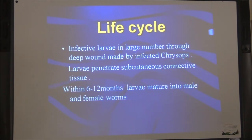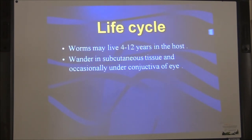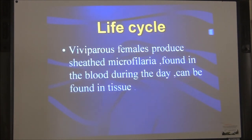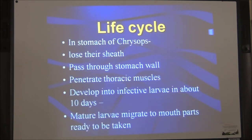The larvae are deposited on the skin and penetrate it. The adult worms live for up to 12 years in the host and wander in subcutaneous tissue and occasionally under the conjunctiva of the eye — that is why it is known as the eye worm. The female produces sheathed microfilaria which are found in the blood during the day — the periodicity is diurnal. In the stomach of Chrysops, the microfilaria lose their sheath, pass through the stomach wall, penetrate thoracic muscles, develop into infective larvae in about 10 days, and the mature larvae migrate to the mouthparts ready to be transmitted to another host.